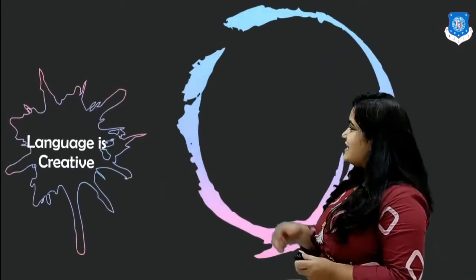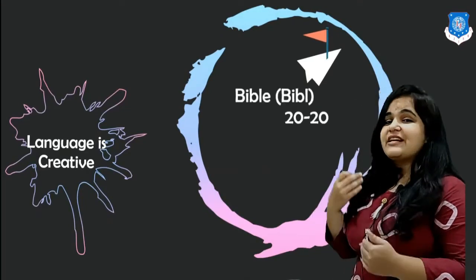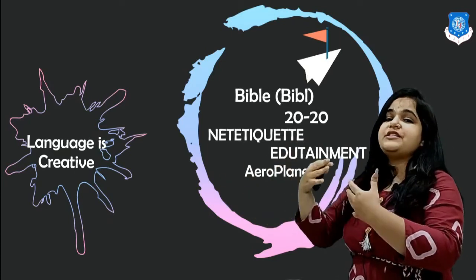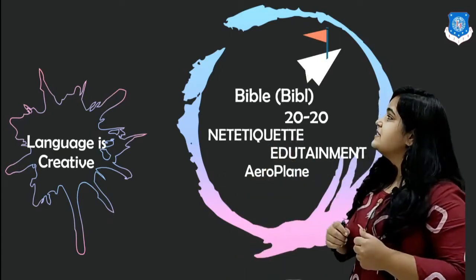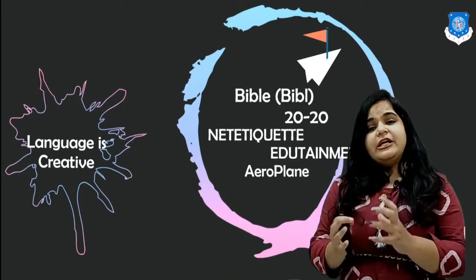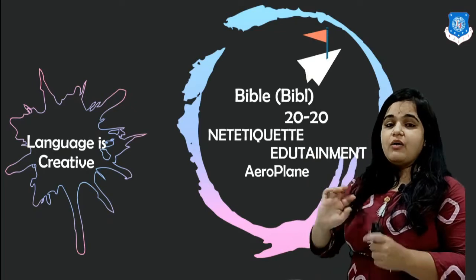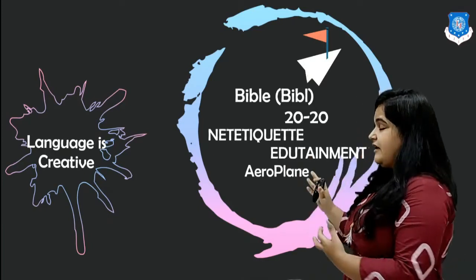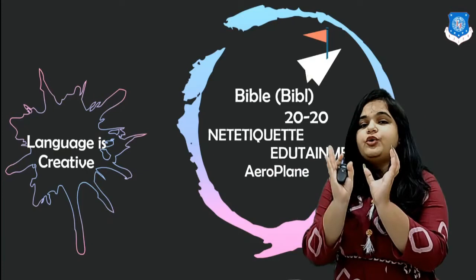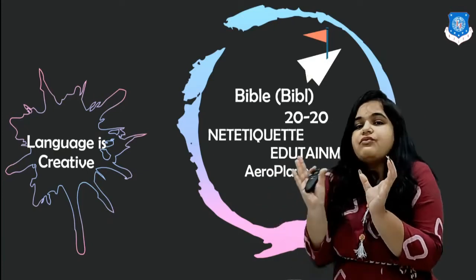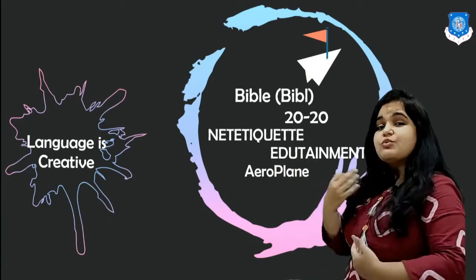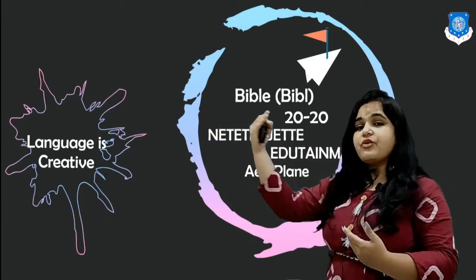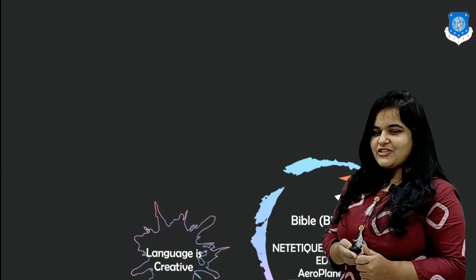The next characteristic of language is that language is creative. The words in a language can be derived from different words in other languages. For example, 'Bible' is derived from a Latin word. The word 'T20' is based on the number of overs played in that match. The word 'netiquette' is a recent word — we join two words, 'internet' and 'etiquette,' to form a new word. Our language is very creative; people tend to add new words using existing words or by borrowing from different languages.